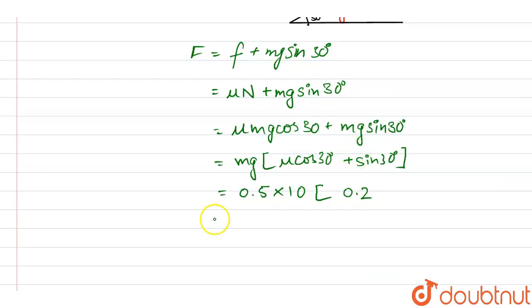Cos 30 is equal to root 3 by 2 and sin 30 is equal to 1 by 2. So it comes out to be finally 0.2 times root 3 upon 2, which is 0.173 plus 0.5.